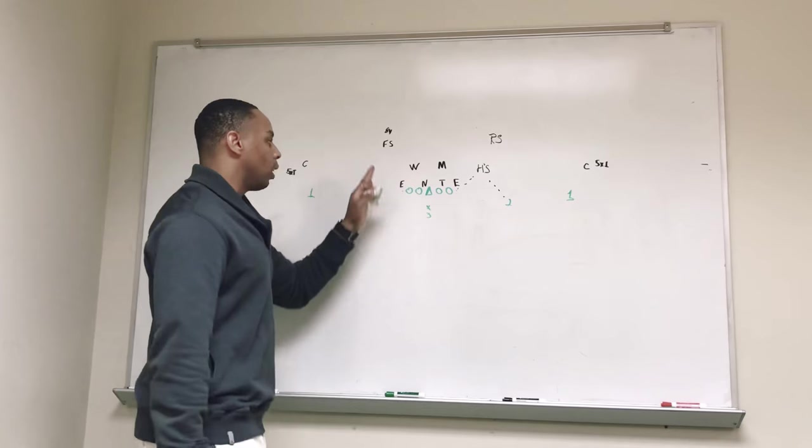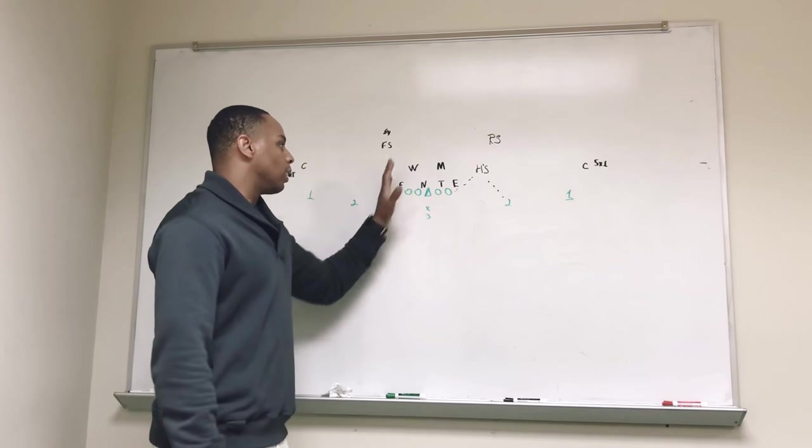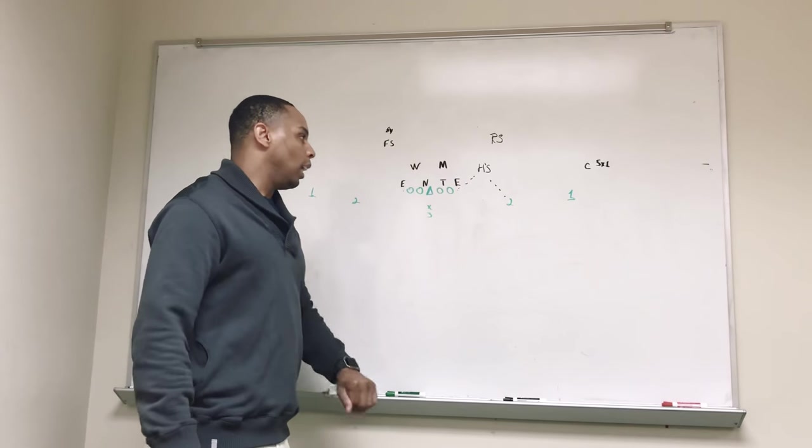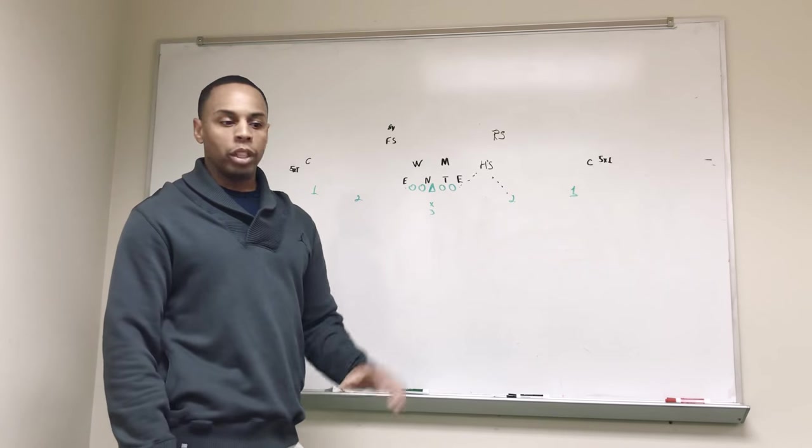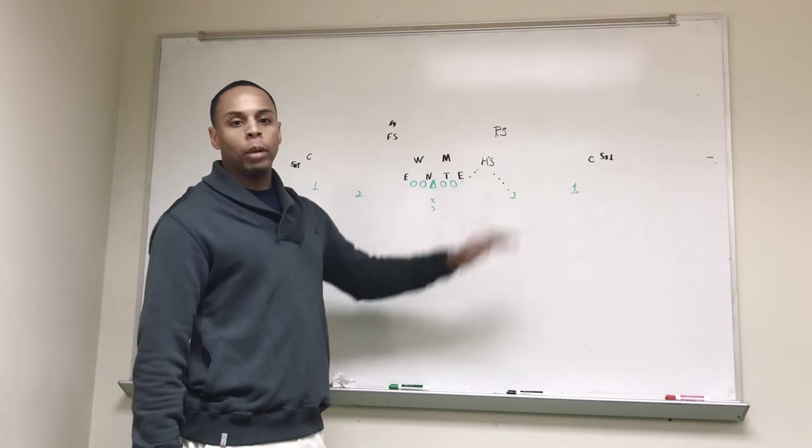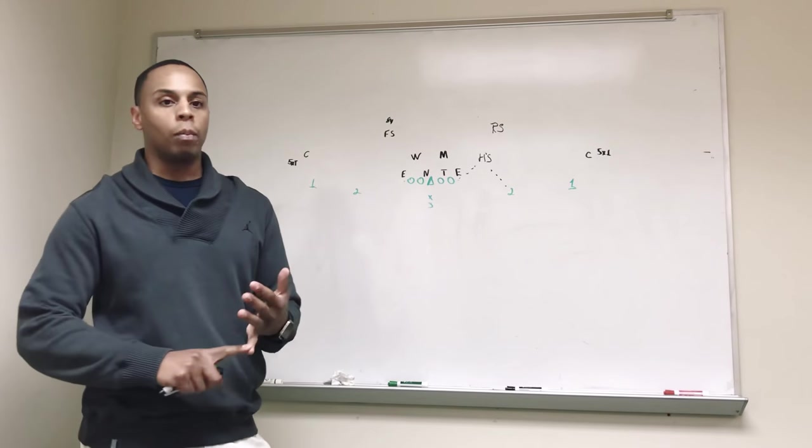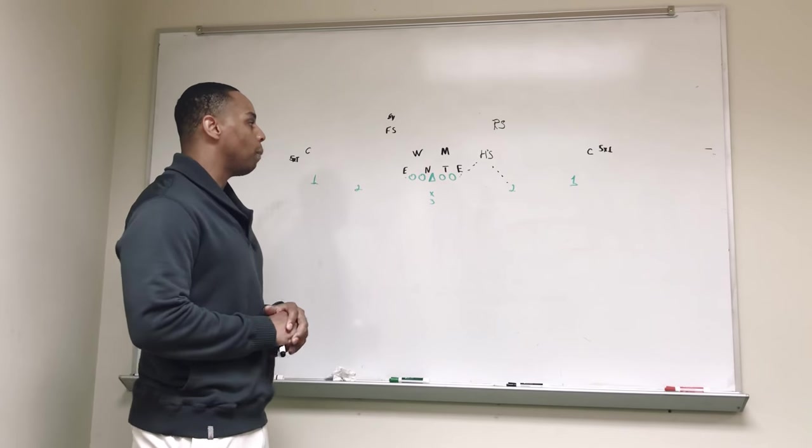So without apexing our weak side backer, that allows us to keep 6 in the box and gives us a good advantage on the numbers as we fit in the run. Our hawk safety's apex position helps us both with the RPO and allows him to be closer to be ready to be in the fit.